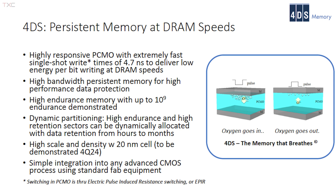I'd like to talk about applications in a bit, but first let's talk about the configuration available to designers, because persistence, endurance, speed, and power are all variables — it's not a single static design. How do all of these compare with DRAM and Flash? We've been pleased that the speed of our cell's response is very, very fast. We are writing and reading faster than DRAM speeds, within that DRAM window. There's no latency penalty for having our memory used side by side with DRAM, or alongside a CPU or GPU core processor.